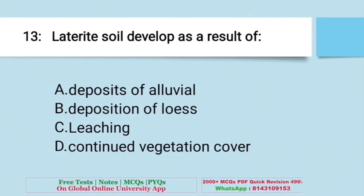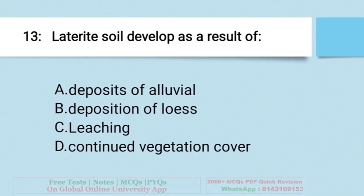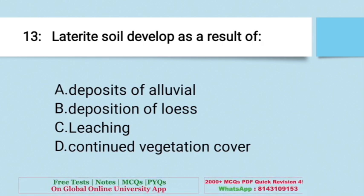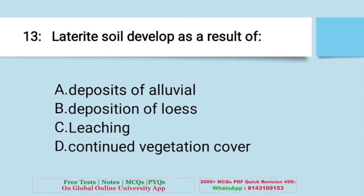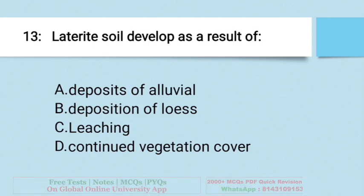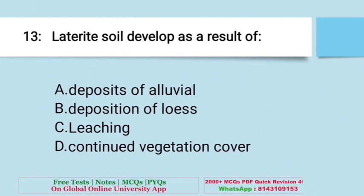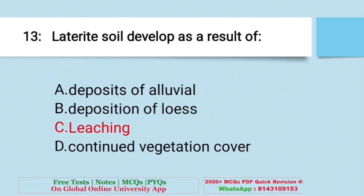Question: Laterite soil developed as the result of — A. Deposits of alluvial, B. Deposition of loess, C. Leaching, D. Continued vegetation cover. The right answer is C — leaching.